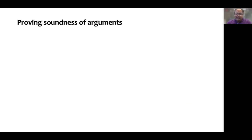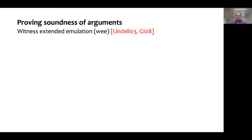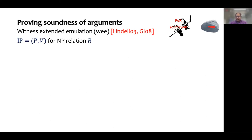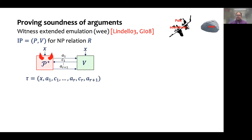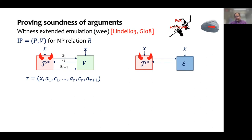I want to give you an idea of what the challenge is and highlight our approach. To do that, I want to first tell you normally how plain soundness of arguments is proved. Specifically, I'll talk about a security notion which has been frequently used in recent work, which is that of witness extended emulation. This is a proof-of-knowledge property and therefore implies soundness. This notion is defined for an interactive protocol as follows: we consider a real-world experiment where the cheating prover interacts with the verifier and their interaction generates a transcript.